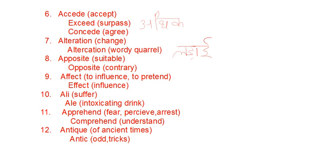Another pair is affect and effect. Affect means to influence or to pretend. Effect is the result. We use effect for the final result, and affect as a verb. We usually say these things are affecting me — here effect is the final result.